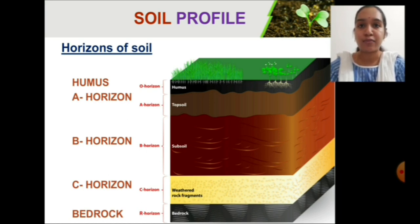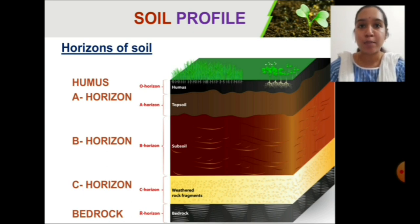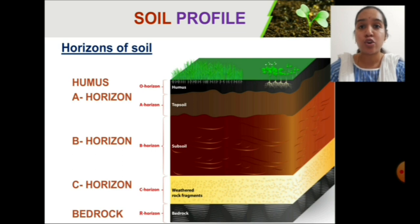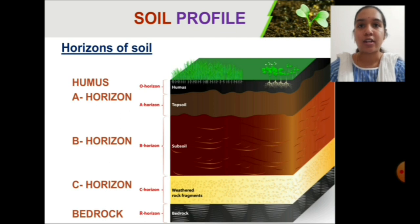The first layer is humus, which you have already learned, and it lies on the top surface of the soil. Then comes the A horizon, which is the topsoil — it is very rich with minerals and nutrients. A horizon is followed by B horizon, which holds the roots of large trees. Then the third layer is the C horizon, also called the parent material, where you see weathered rock fragments. And at the last is the bedrock — this layer is completely filled with hard rocks.